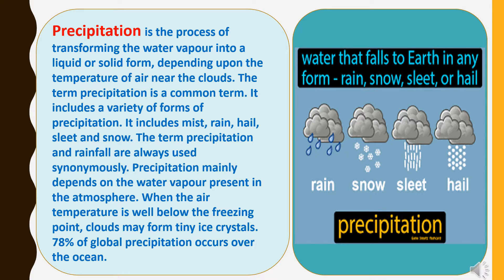The term precipitation is a common term. It includes a variety of forms such as mist, rain, hail, sleet, and snow. The terms precipitation and rainfall are often used synonymously. Precipitation mainly depends on the water vapor present in the atmosphere.